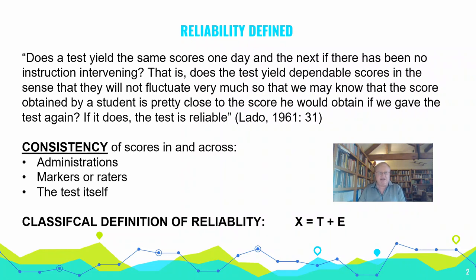The classical definition of reliability is: X — the score any individual gets — equals their true score, a genuine index of their true ability, plus E, which is error. The error is associated with forms, raters, or anything else that can affect the score because of something not related to the learner's ability on the construct of interest. So: observed score equals true score plus error.